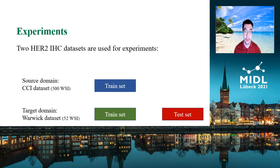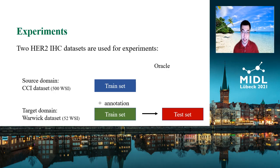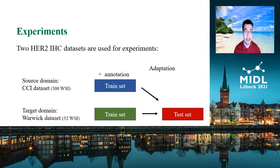We test our method on two HER2 IHC breast tissue datasets. One dataset is collected from the Alberta CCI, which has 500 Whole Slide Images. The other is the publicly available Warwick Challenge dataset, which has 52 Whole Slide Images, split into a train set and a test set. The task is to predict four categories of HER2 scores for each image. We set up experiments following several settings commonly used in domain adaptation research: a source-trained model, an oracle setup trained with labeled target domain data, and an adaptation setup trained with labeled source and unlabeled target domain data.